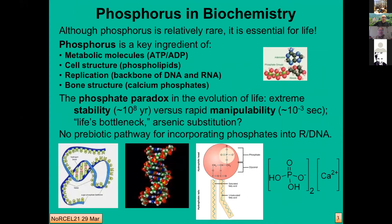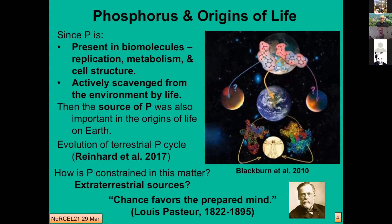Although phosphorus is rare, it's essential for life. It's a key ingredient for metabolism — ATP, ADP — in cell structure, replication, and bone structures. However, it's been pointed out that in the origins and evolution of life there's a phosphate paradox: most of the phosphate we see on Earth is extremely stable in phosphates, whereas life needs a molecule that can be very rapidly manipulated. This provides somewhat of a bottleneck, and presently we know of no prebiotic pathways for incorporating phosphates with their stability into important molecules for life. So since phosphorus is present in biomolecules and actively scavenged by living systems, its source is also important for origins of life.